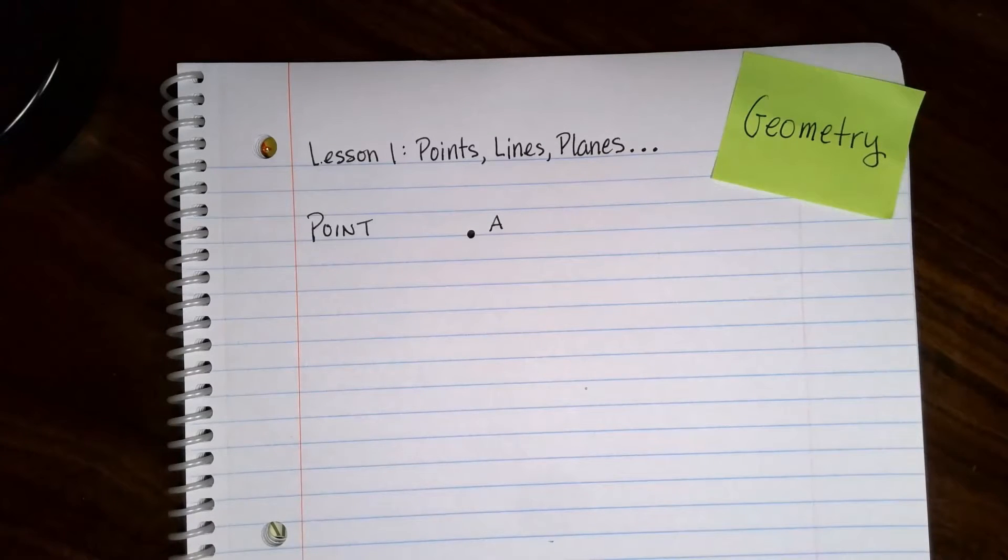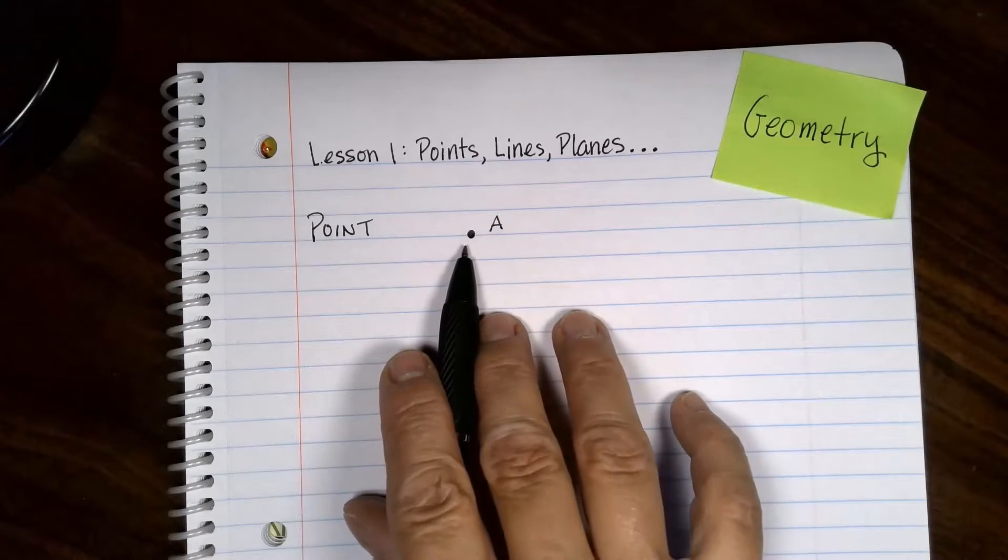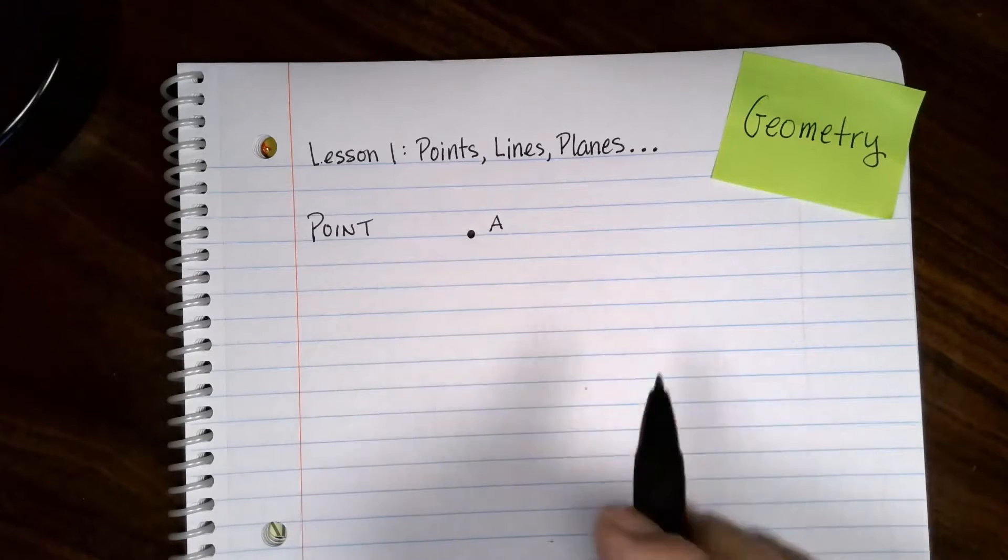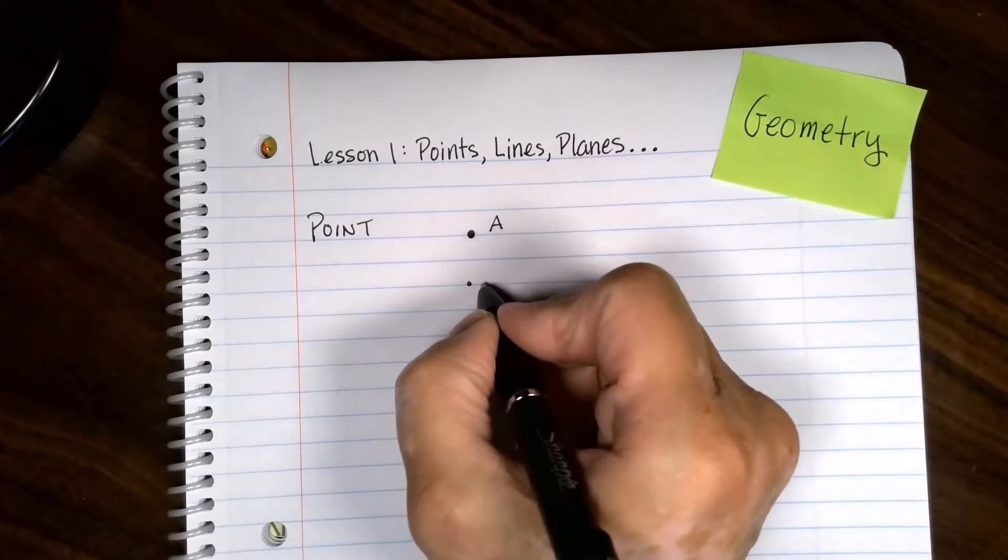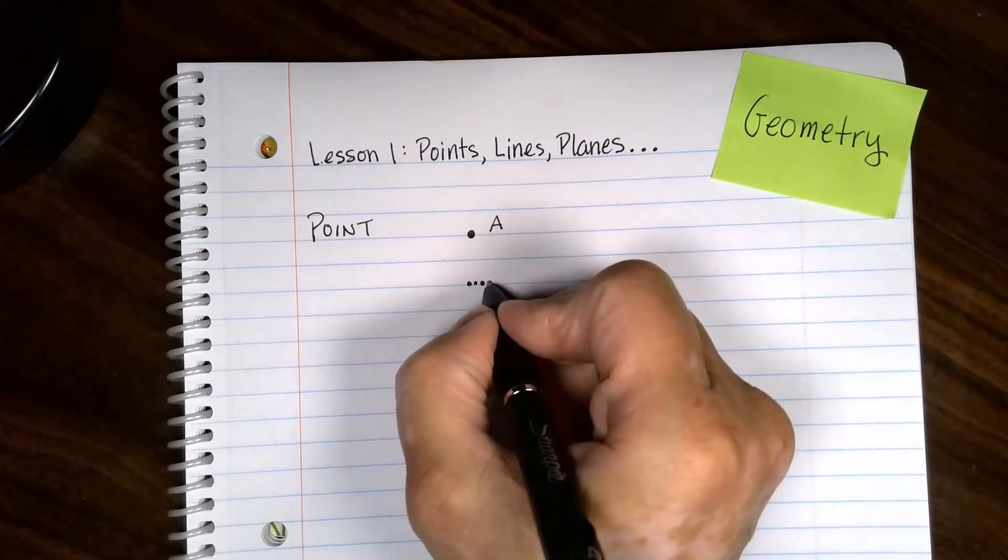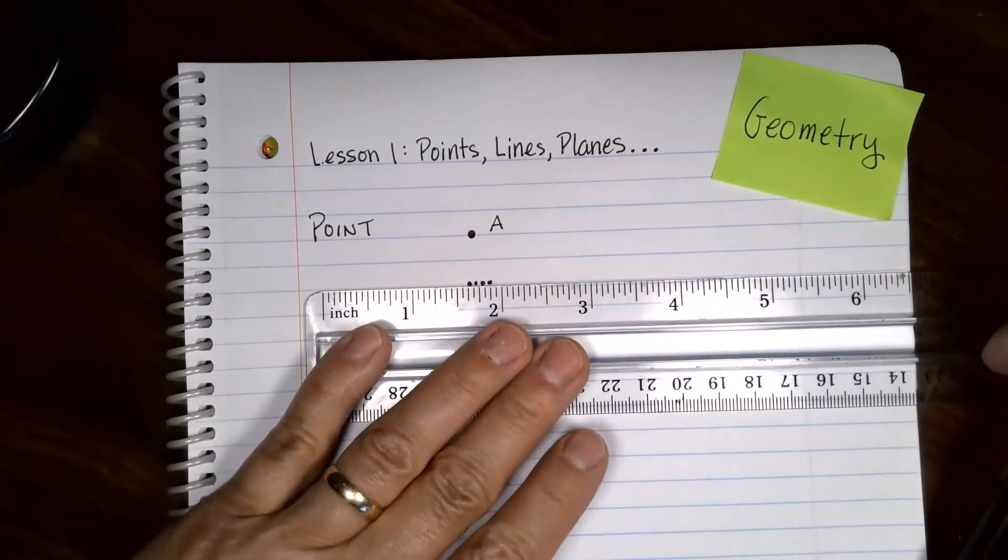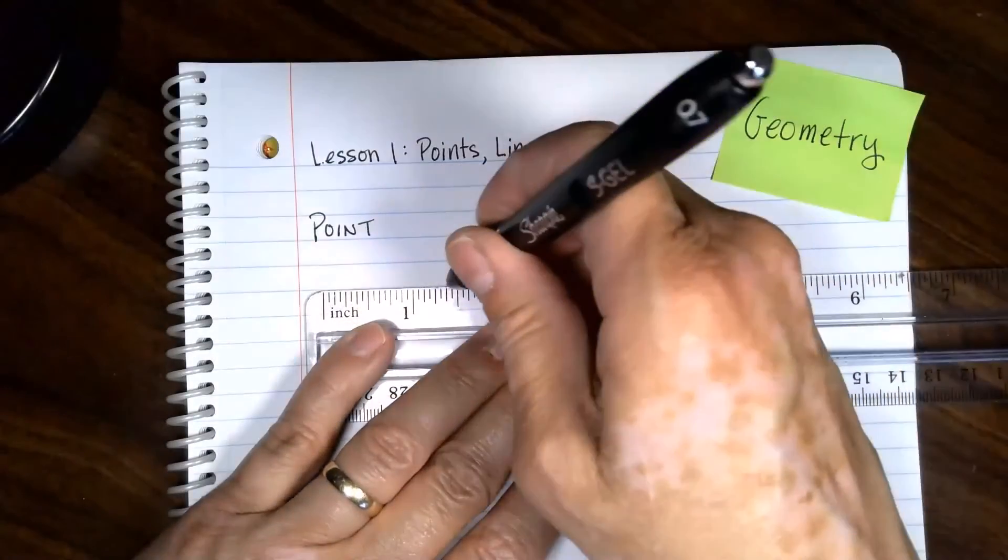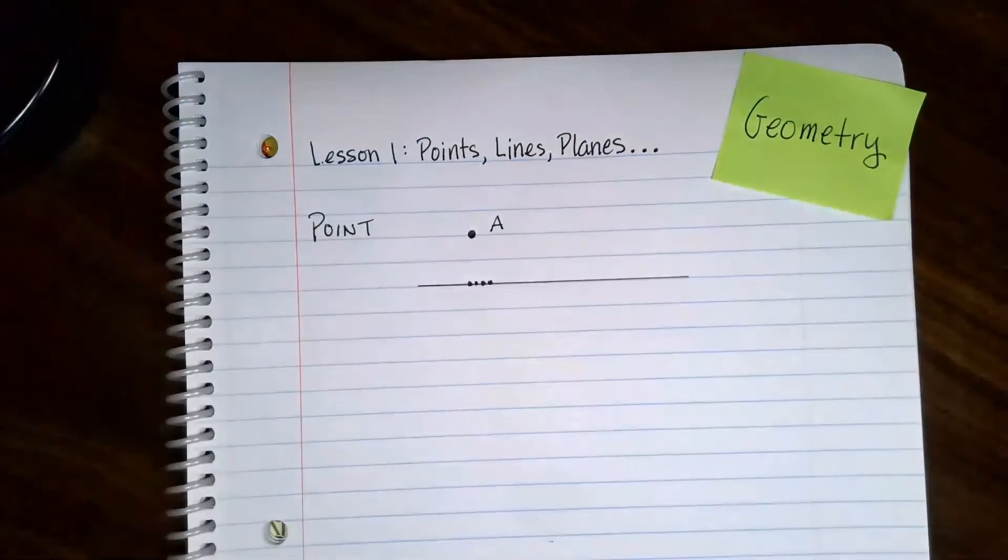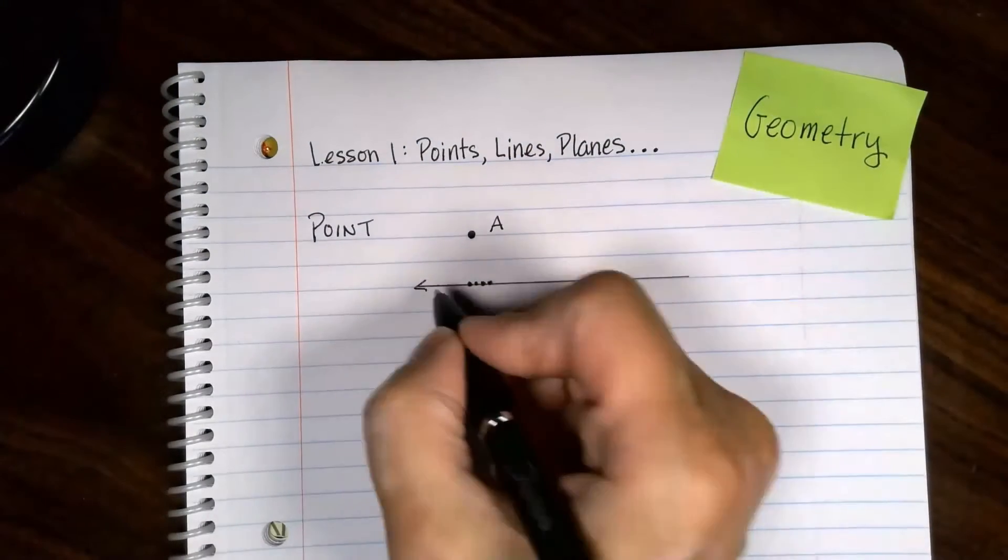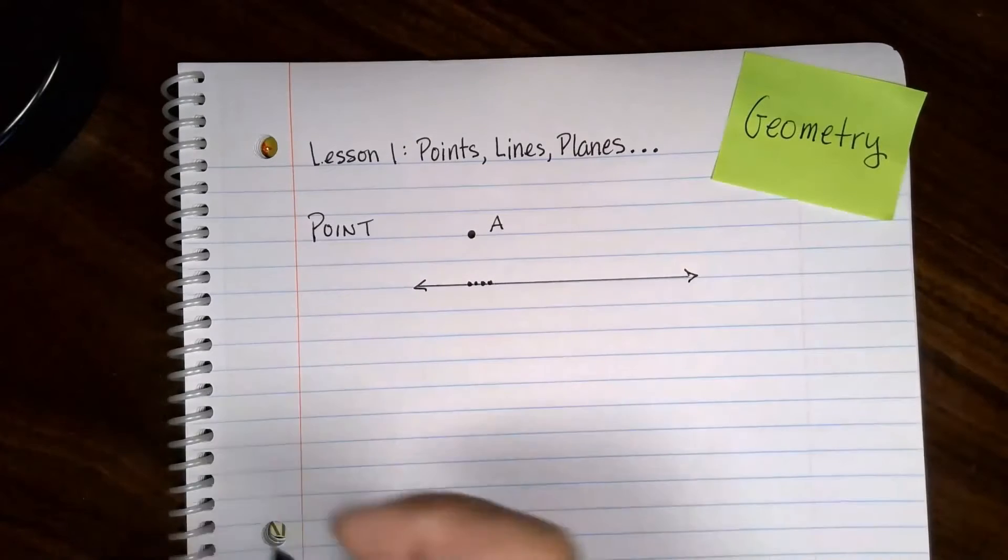If you imagine you take an infinite number of points and put them all together side by side, really close together, you would get a thing that looks a little like this going forever and ever in both directions, so we put arrows on both ends. That would be a line.